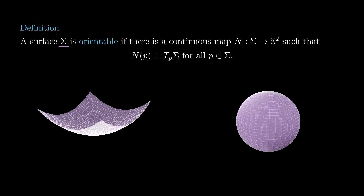This motivates the following definition. We say that a surface sigma is orientable if there is a continuous map n from sigma to the sphere with the property that n of p is perpendicular to the tangent plane T_p sigma for all p in sigma. A map like this is called an orientation.